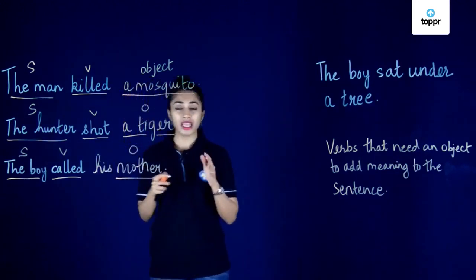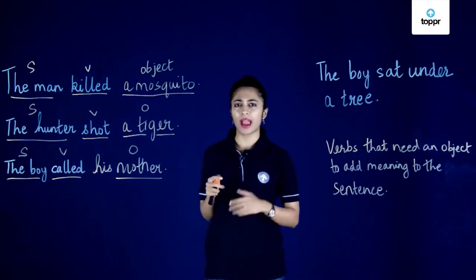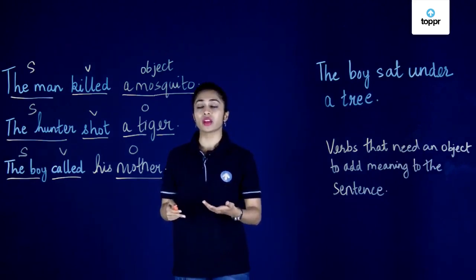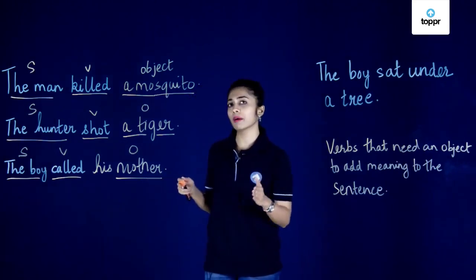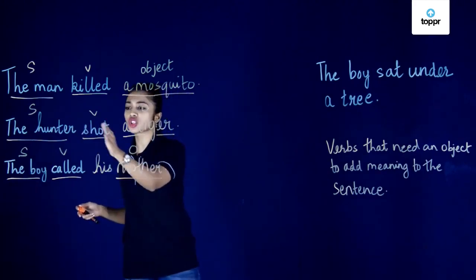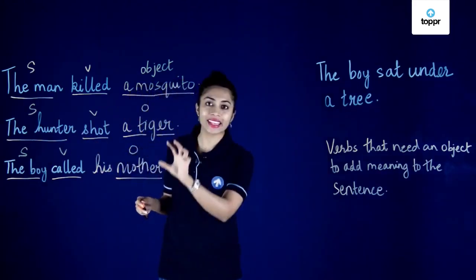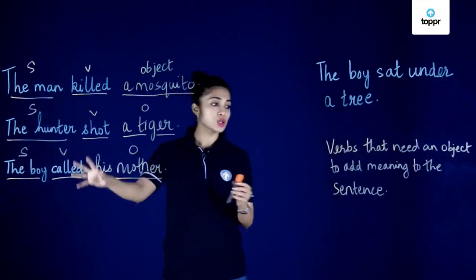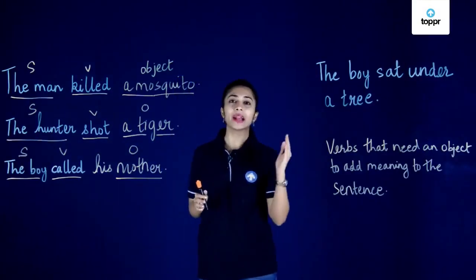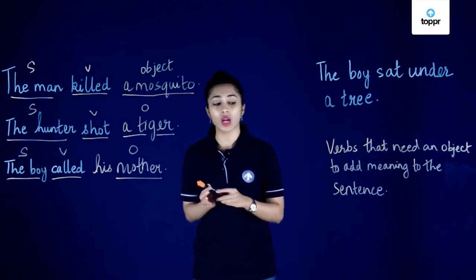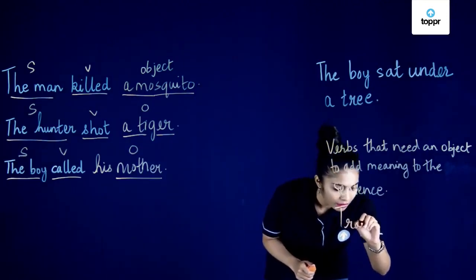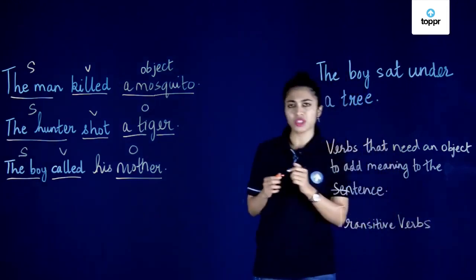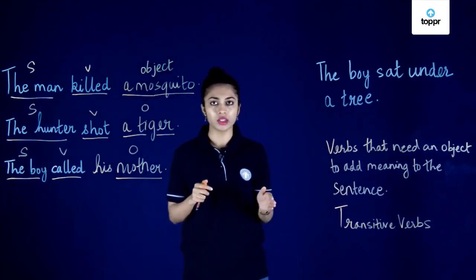So what are these verbs — killed, shot, and called? These verbs are transitive verbs. Why are they transitive? Because they need an object to add meaning to them. Initially we just had 'the man killed,' 'the hunter shot,' and 'the boy called.' By adding objects — mosquito, tiger, and mother — we have added meaning. Verbs that need an object to add meaning to the sentence are called transitive verbs. Simply put, transitive verbs need an object to complete them.